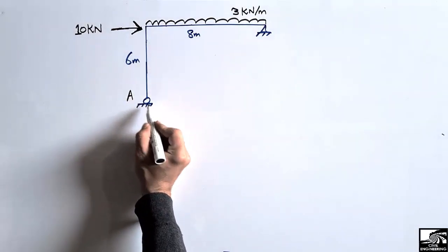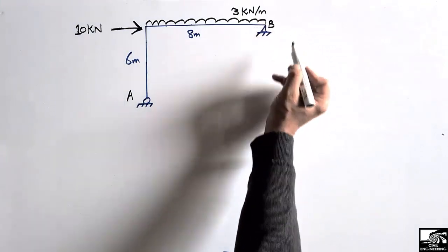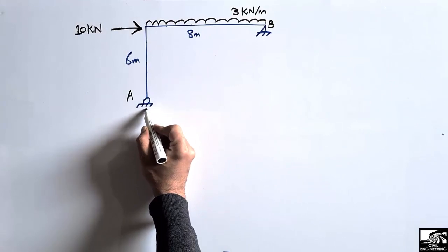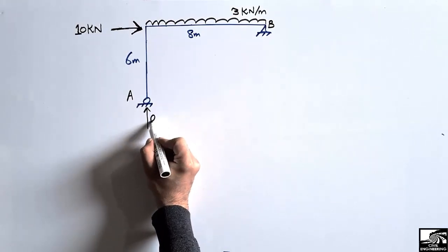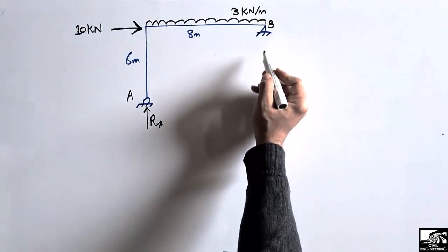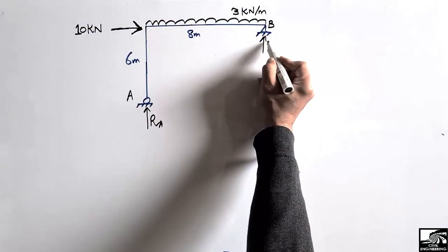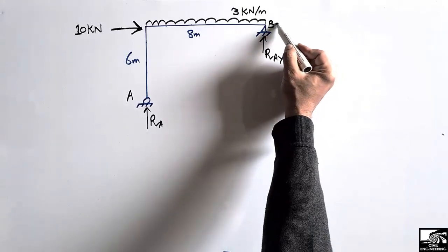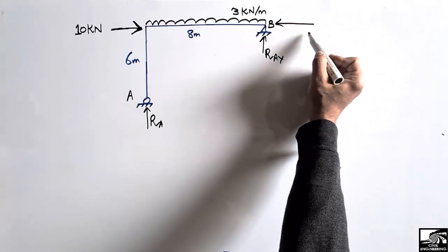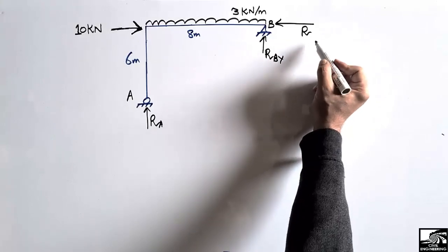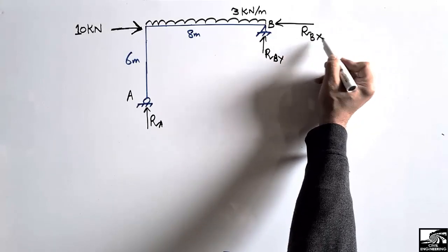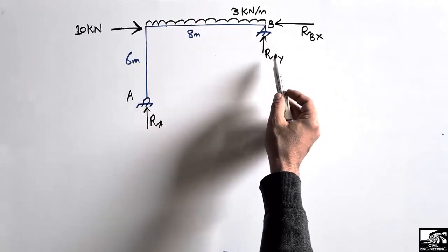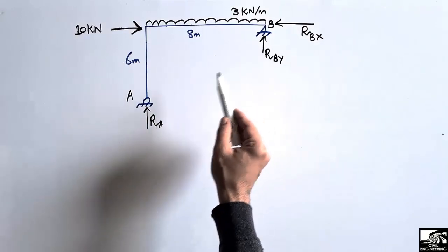To analyze this frame, first we have to name its points. Let's suppose this is A and this is B. Point A is the lower roller support — it can only resist the vertical load, so this is RA. Point B is the hinge support, so it can resist both the vertical reaction RBY and the horizontal reaction RBX.